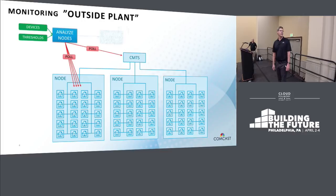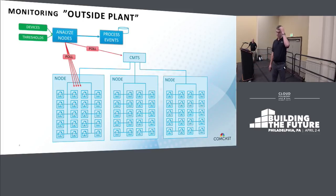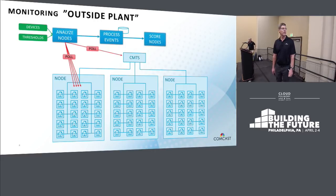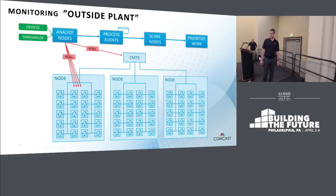We analyze this data to detect various event conditions on the node. Once we have the event conditions, we can compare them with the previous event conditions. This allows us to generate event status for the node in three lists: new events that have just started, continuing events, and events which are no longer present on the node and have just completed. From the event lists, we can calculate a node score, which is a measure of the health of the node. From the event lists and the node score, we can prioritize the work for the techs in the field.